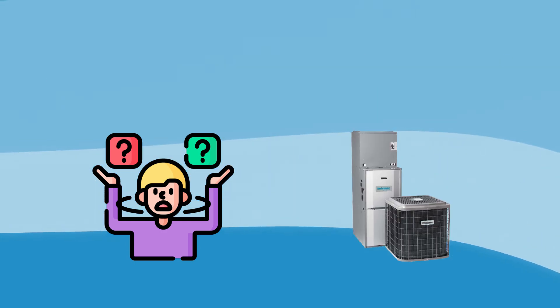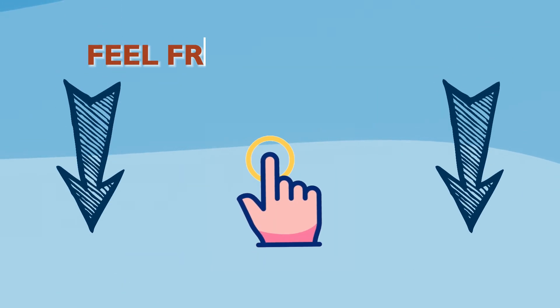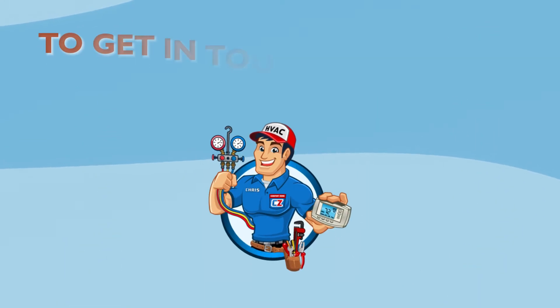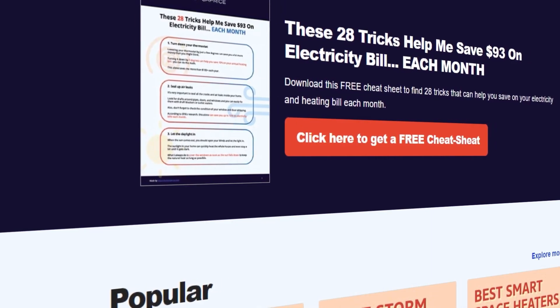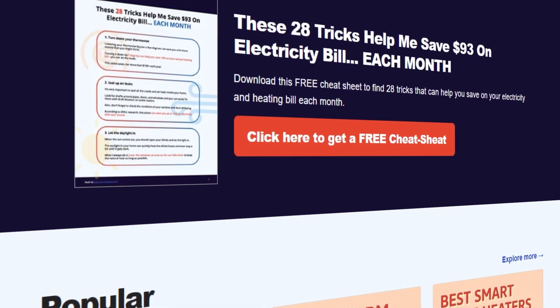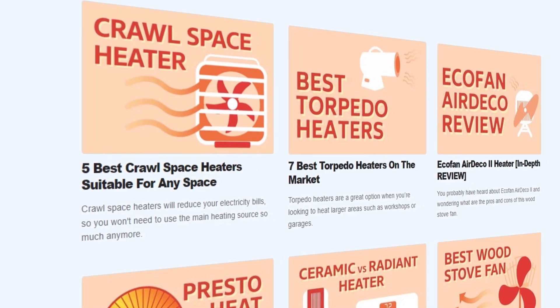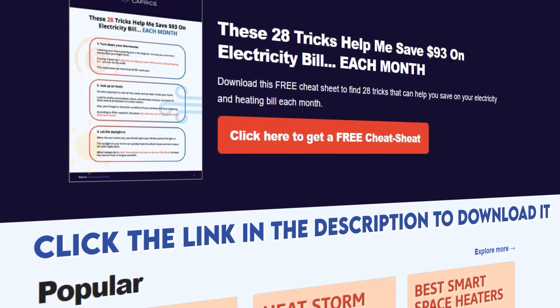If you ever have any issues with your central AC system, feel free to click the link in the description to get in touch with your local HVAC contractors. We also have a free cheat sheet with 28 tricks that can help you save on your electricity, heating, or cooling bill each month. Click the link in the description to download.